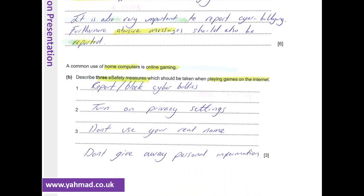A further question: 'A common use of home computers is online gaming. Describe three safety measures which should be taken when playing games on the internet.' The answers are: report and block cyberbullies, turn on privacy settings, don't use your real name, and don't give away personal information.